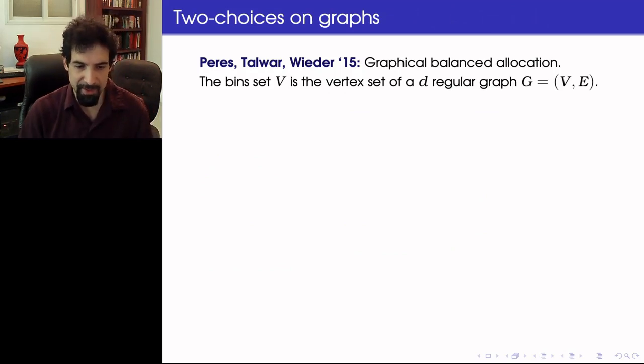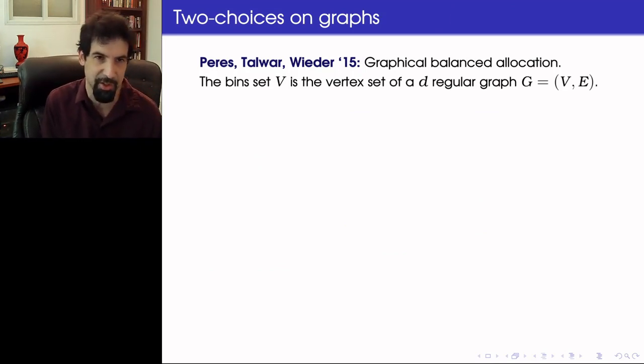So following these remarkable results on two choices, there were many developments, variations, generalizations and applications. And today we're going to consider the graphical two choices. So this was introduced by Peres, Talwar and Wieder in 2015 as graphical balanced allocation. And we look on the bin set in this setting, V, as the vertex set of a d-regular graph.